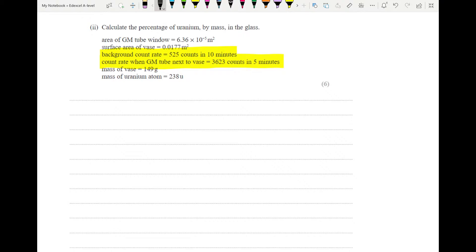So our first job is to get these down into counts per second. So if we have 3623 in five minutes, that means we've got 3623 divided by five times 60, or 12.08 counts per second. Now let's get the background count rate into counts per second as well. So 525 in 10 minutes over 10 times 60. That will give us 0.875 counts per second for our background.